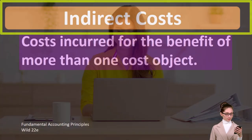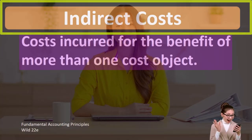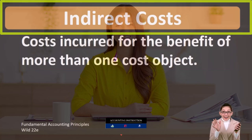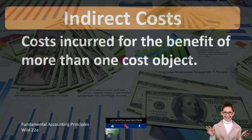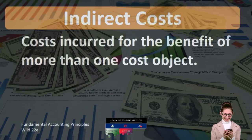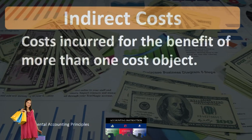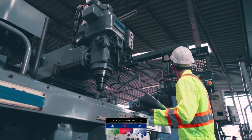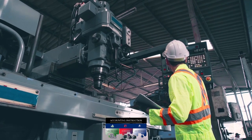Indirect costs are costs incurred for the benefit of more than one cost object. When considering indirect costs, we can compare them to direct costs and see the contrast between the two when considering something like a manufacturing company — a company that is manufacturing inventory.